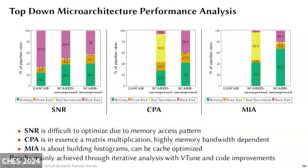This is a top-down micro-architecture performance analysis of all three frameworks. On these charts, you want to see green, which means instructions are retiring — basically unimpeded during their lifetime. What you really do not want to see is yellow, which is bad speculation, the worst kind of impedance. SNR is very difficult to optimize, and as you can see, all three frameworks are doing the best they can, only resulting in about a 40% retiring rate at the peak for SCAR. This is because SNR has a difficult memory access pattern, so you are limited in the ways you can speed up your code.